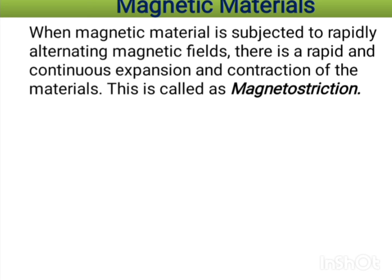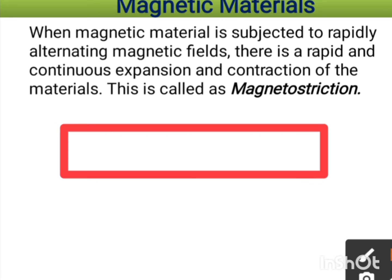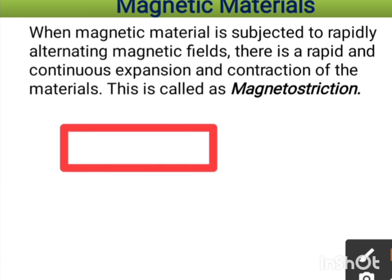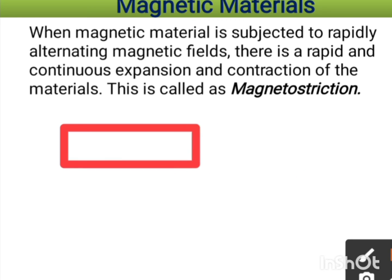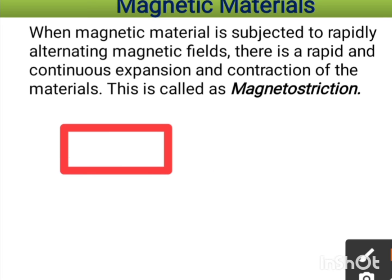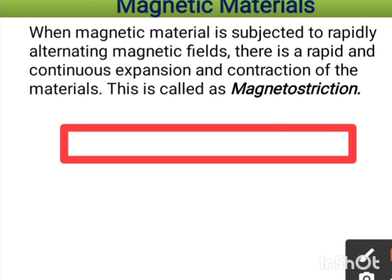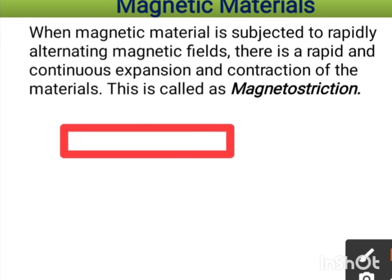When a magnetic material is subjected to a rapidly alternating magnetic field, there is rapid and continuous expansion and contraction of the material. This property is called magnetostriction. This is an important term to remember when studying magnetic materials.